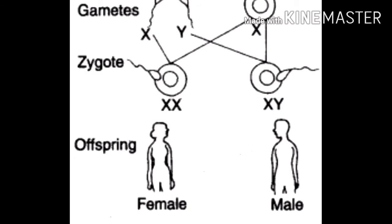But the chromosomes of the 23rd pair are different in males and females. These are called sex chromosomes and they are responsible for the development of sex in human beings.